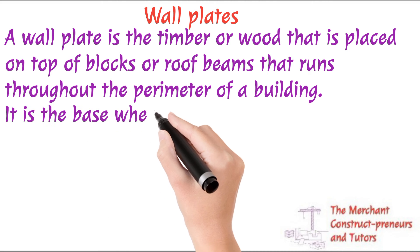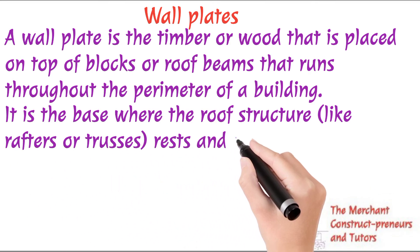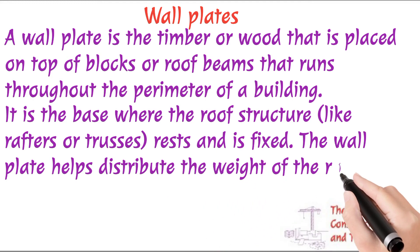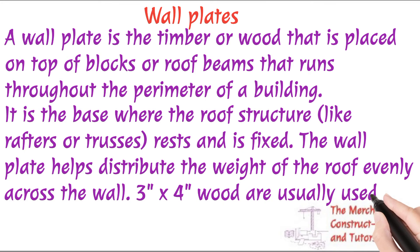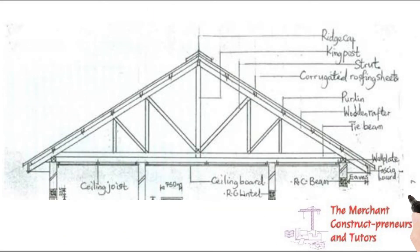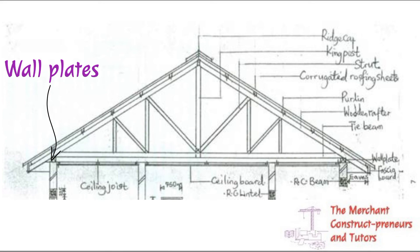A wall plate is a timber or wood placed on top of blocks or roof beams that runs through the perimeter of the building. Just as you see with a rectangular building, the wall plate runs on the walls through the perimeter only — not inside. It is the base where other roof structures rest on — the rafters or the trusses, everything rests on it. The wall plate helps to distribute the weight of the roof evenly across the wall. It transfers the load from the roof structure down. Three-by-four woods are usually used for wall plates, although larger sizes can be used depending on the roof.